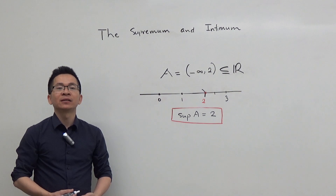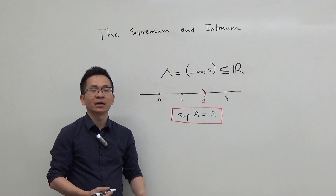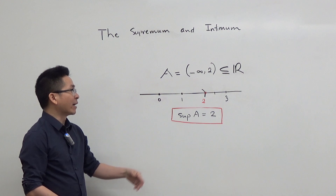In this lecture, I'm going to talk about the supremum and the infimum of a set. Here, A is the open interval minus infinity to 2. As you can see, 3 is an upper bound of this set, because 3 is greater than or equal to any element of the set. 4 is also an upper bound of the set.